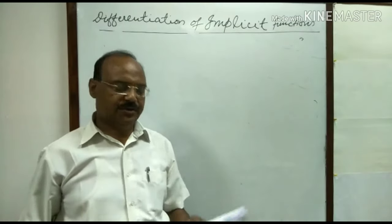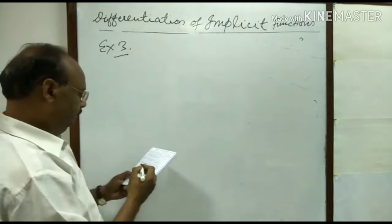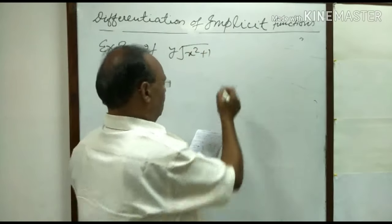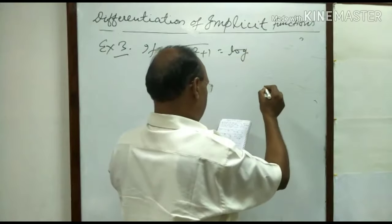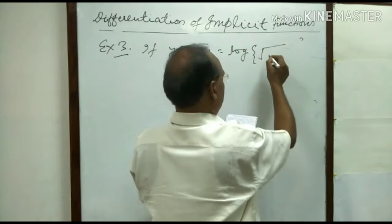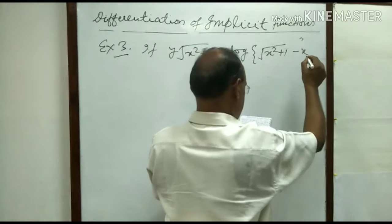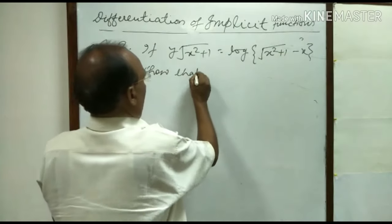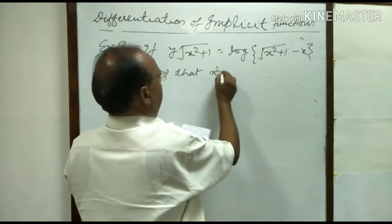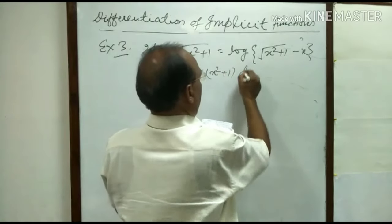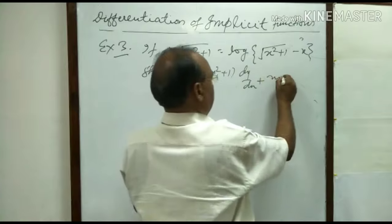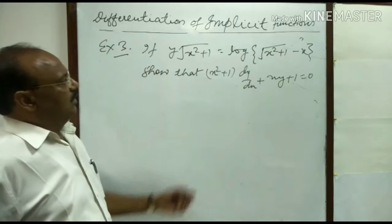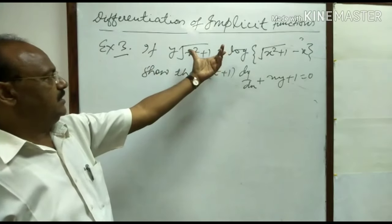Now let us see the next question. If y times root(x square plus 1) is equal to log of root(x square plus 1) minus x, then show that (x square plus 1) dy/dx plus xy plus 1 is equal to 0. We are differentiating this expression with respect to x.